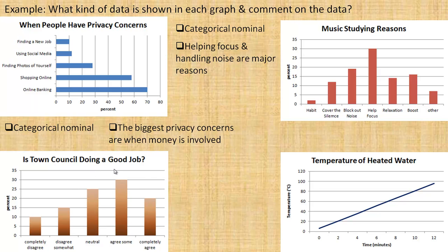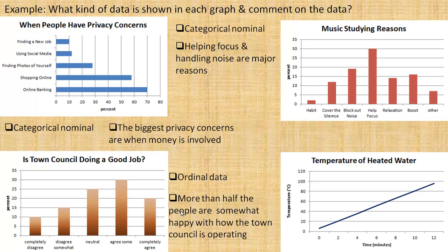Is the town council doing a good job? This would be ordinal data, because there is an order or rank to it — people go from completely disagree to completely agree. It seems like more than half of the people are somewhat happy, with these three categories from neutral to agree or completely agree showing that more than half the people are at least somewhat happy with how the town council is operating.